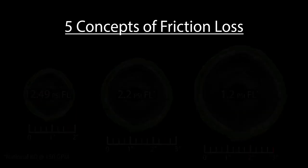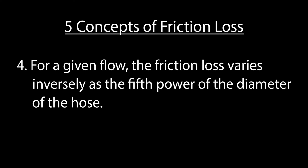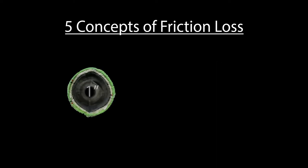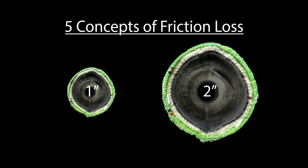The fourth concept states that for a given flow, the friction loss varies inversely as the fifth power of the diameter of the hose. Simply put, if the flow is kept constant, if the hose size is doubled, the friction loss is only 1/32nd of the smaller hose.